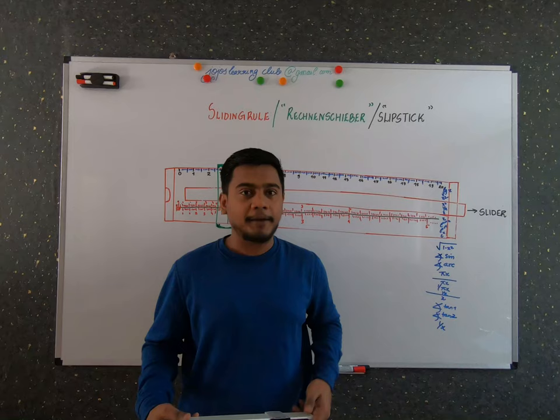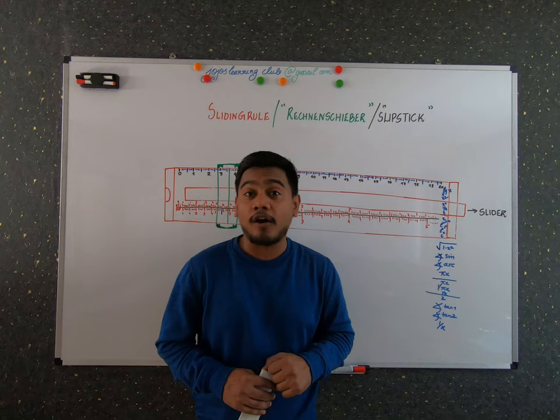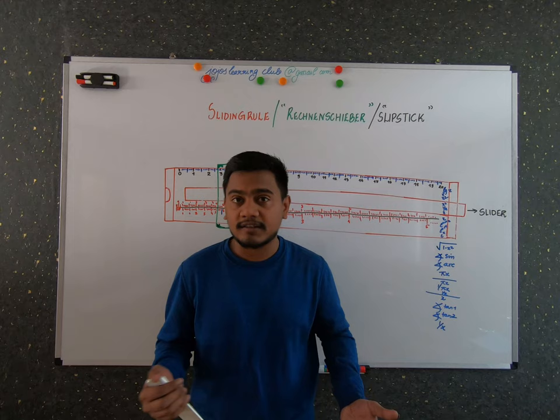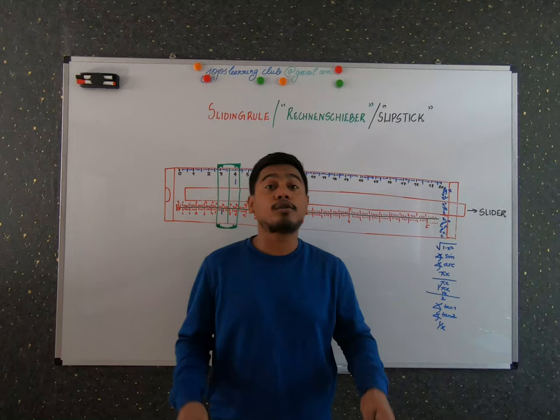The sliding rule was helpful for people in the field of science and engineering to do logarithmic calculations just by using a sliding ruler. It was used until the 1970s, until the evolution of electronic calculators and scientific calculators. Once scientific calculators came into use, sliding rulers were rarely used.